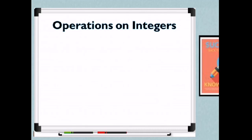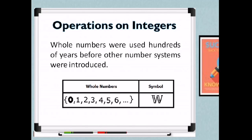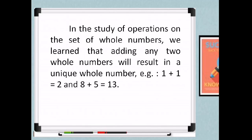Those are the sets of natural numbers. When we say whole numbers, these were used hundreds of years before number systems were introduced. Compared to natural numbers, whole numbers include zero, and the symbol is capital W. Adding any two whole numbers results in a unique whole number — for example, 1 plus 1 equals 2, and 8 plus 5 equals 13.